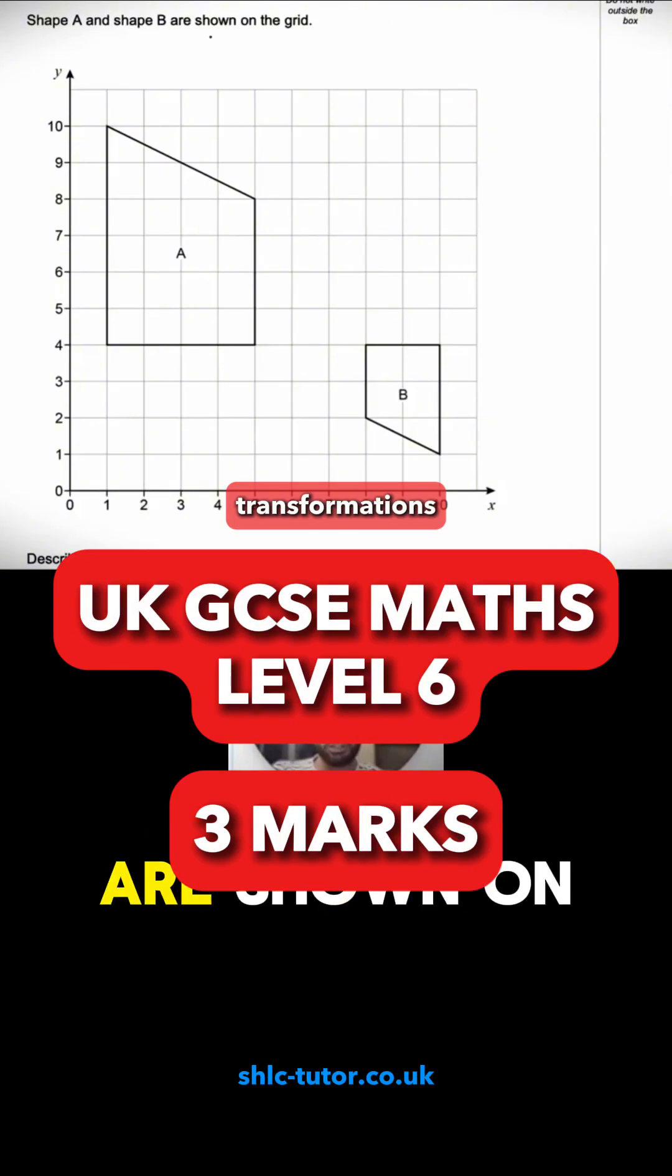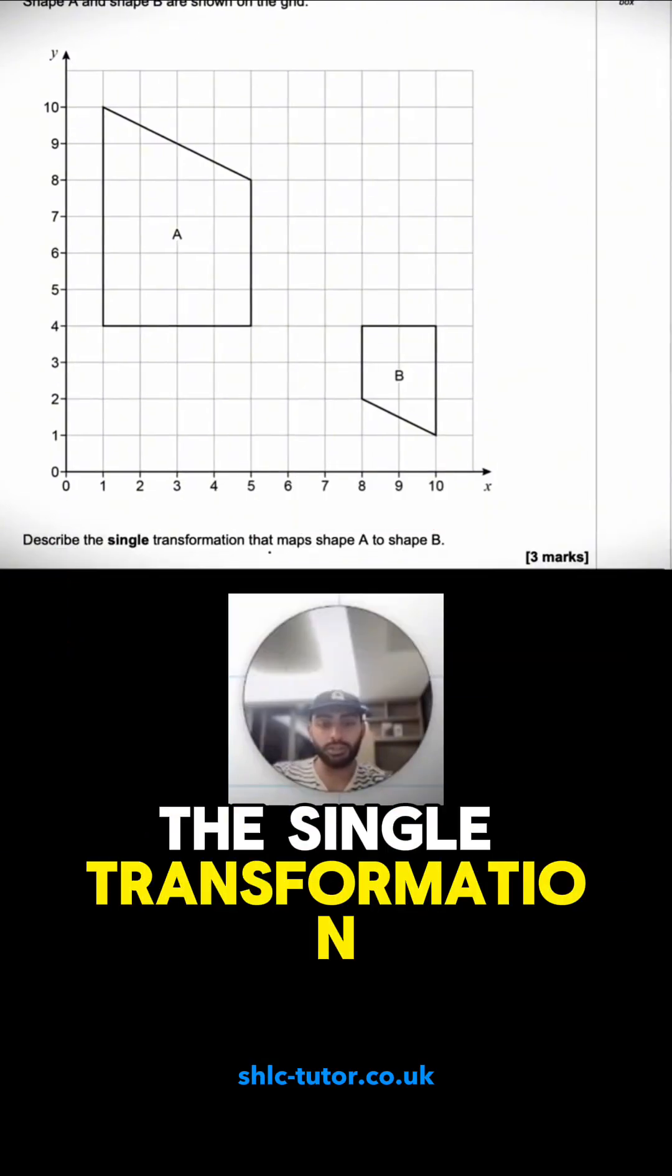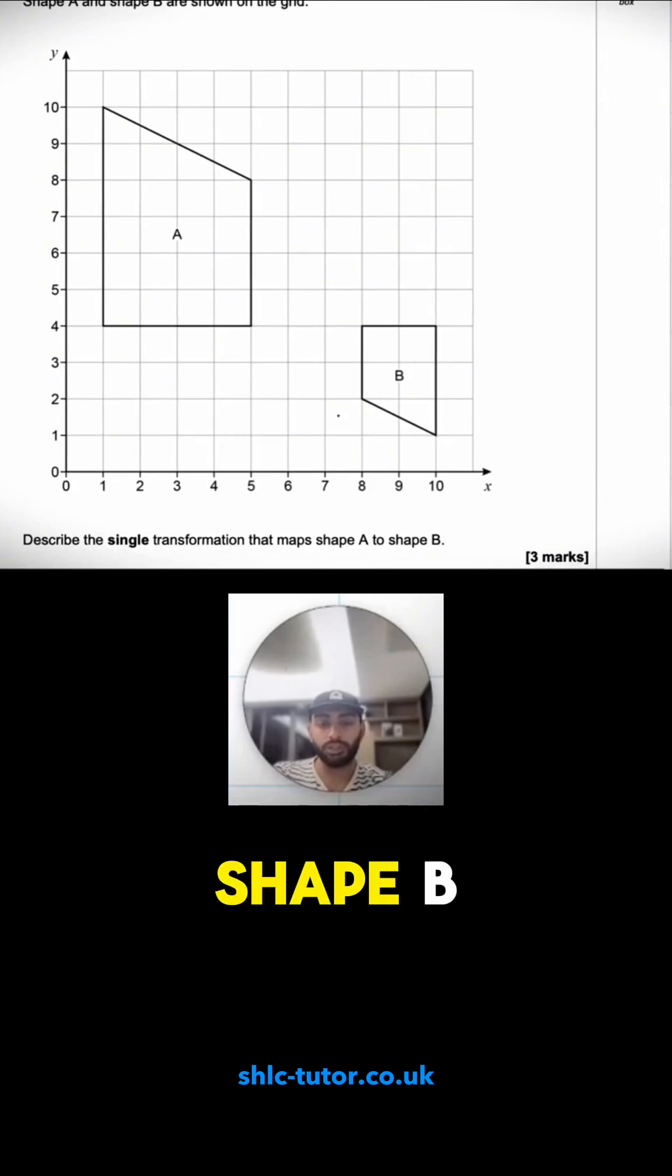Question 22, shape A and shape B are shown on the grid. Describe the single transformation that maps shape A onto shape B. So I've gone from A to B and I can see the shape has got smaller.